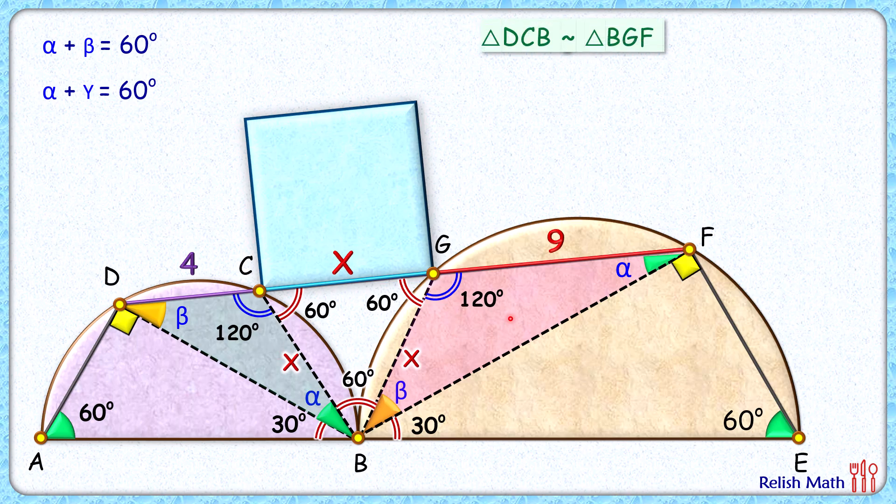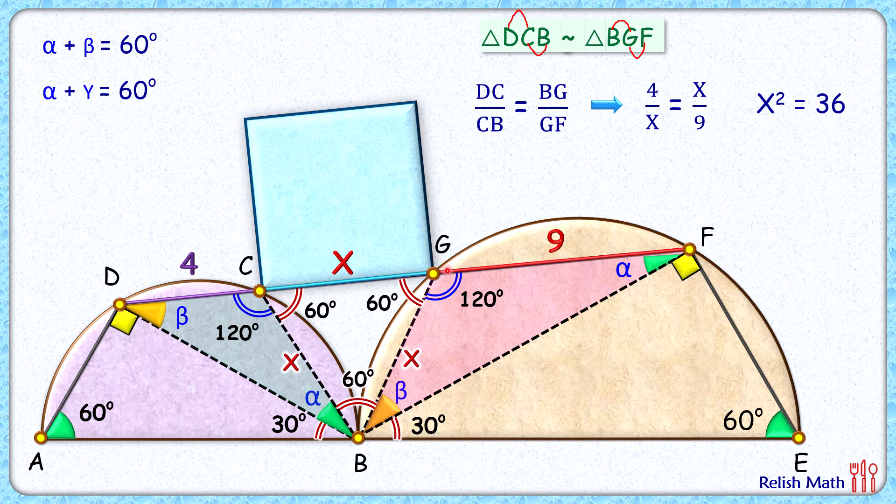As these triangles are similar, thus the ratio of corresponding sides will be equal. That is DC upon CB will be equal to BG upon GF. Putting the values here: DC is 4, CB is x, GB is x, and GF is 9. Solving, we'll get x² is 36. And x² is what? It's the area of this square we had to find.